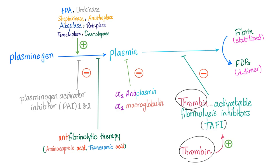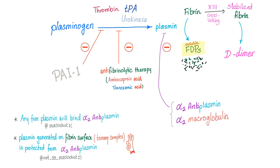TAFI is activated by thrombin — thrombin is acting in its self-interest because thrombin is the one that formed the clot, so if you decide to tamper with it, it's going to prevent you. To summarize: who stimulates plasminogen to plasmin? TPA, urokinase, etc. Who inhibits it? Plasminogen activator inhibitor from the inside, and anti-fibrinolytic therapy from the outside — aminocaproic acid and tranexamic acid.